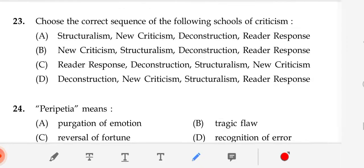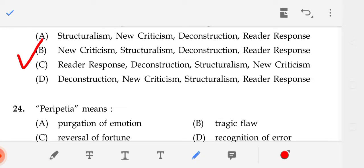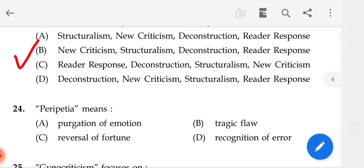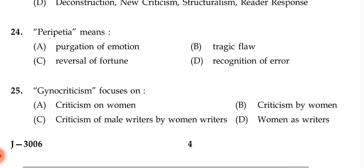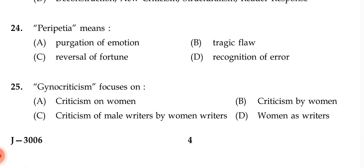Choose the correct sequence of the following schools of criticism. The correct answer is B — New Criticism, Structuralism, Deconstruction, Reader Response.